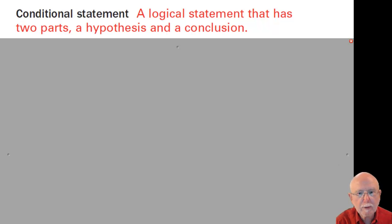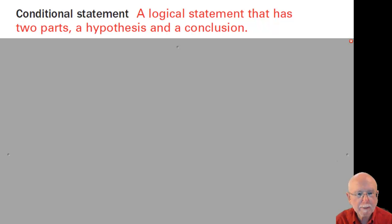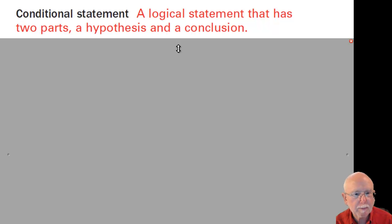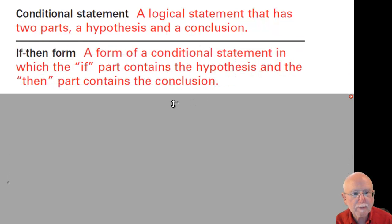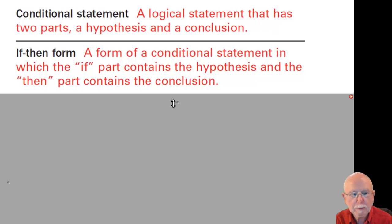A conditional statement is a logical statement that has two parts: a hypothesis and a conclusion. In geometry, we use 'hypothesis' in a totally different meaning than it is used in science, so forget everything you know about it from science — this is totally different. A conditional is an if-then statement; generally the 'if' and 'then' are written out, but sometimes they're implied. When written, it is in the if-then form.